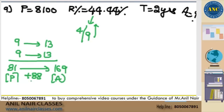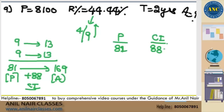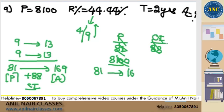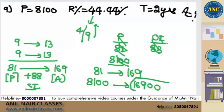Extra 88 is nothing but CI. If the principal is 81, CI is nothing but 88. But according to the question, the principal is 8100. 81 into 100 is 8100, so the amount is 16,900. Wait — the question asks for amount, not CI. So 81 gives 169 and according to the question 8100, the answer is 16,900. I hope this method is clear.